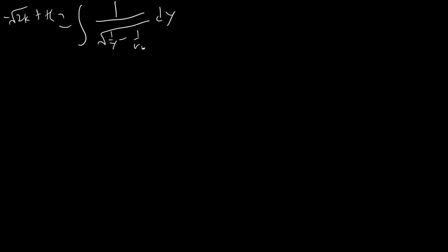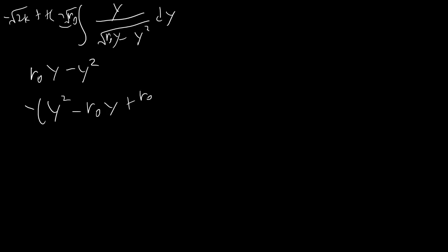The first thing we do is multiply by √r₀ in the top and bottom, giving us √r₀ on top and turning the inner expression so that we get r₀/y inside the square root. Then we multiply by y in the top and bottom: we get y on top, and inside the square root we get y² and r₀y. Now let's complete the square. We have r₀y - y², which equals -(y² - r₀y + r₀²/4) + r₀²/4, giving us r₀²/4 - (y - r₀/2)².